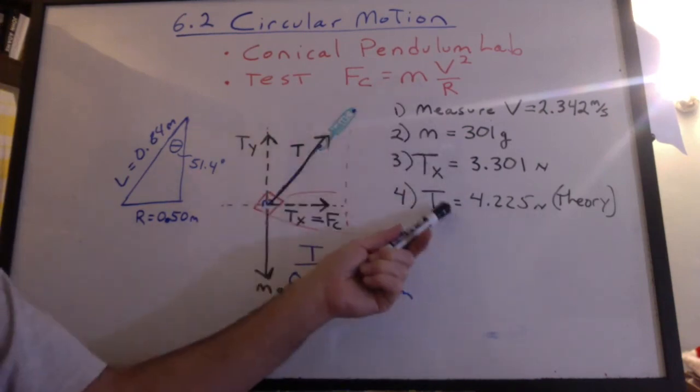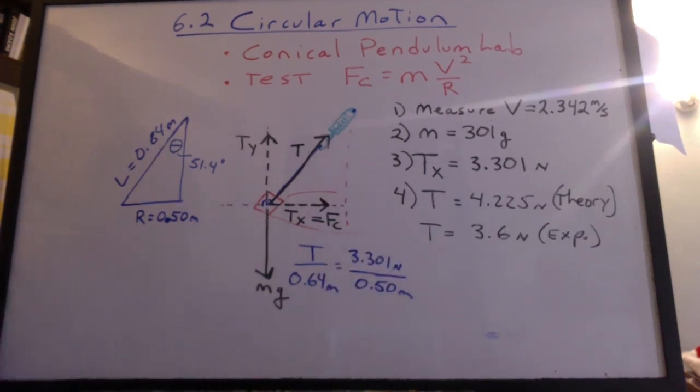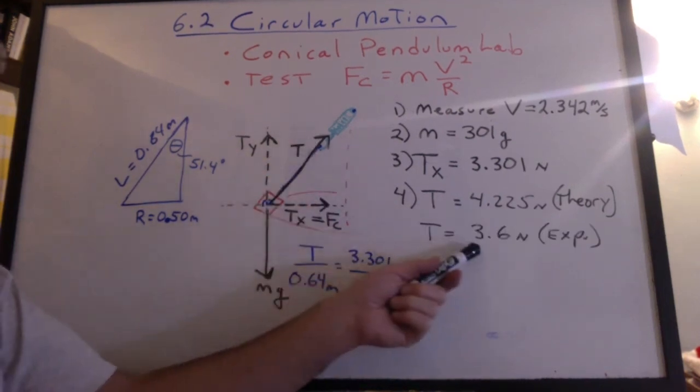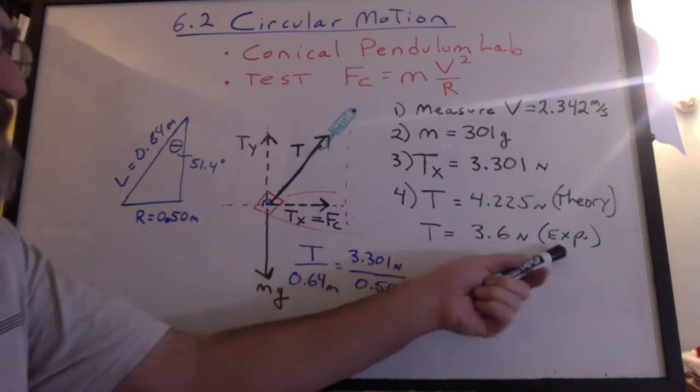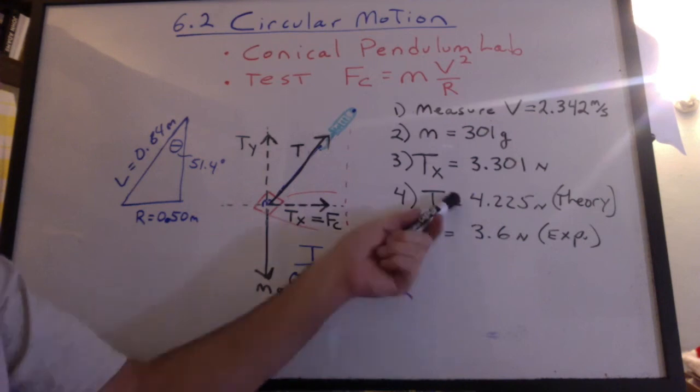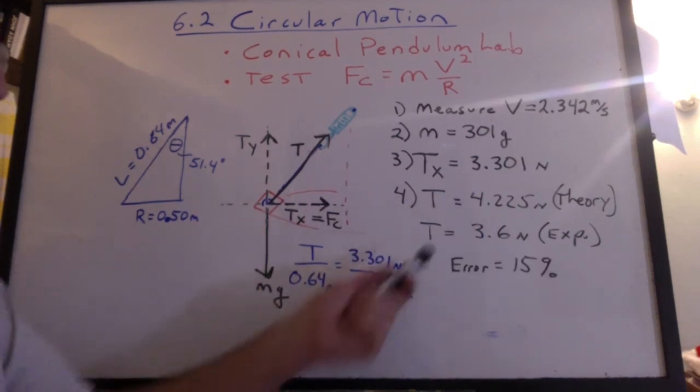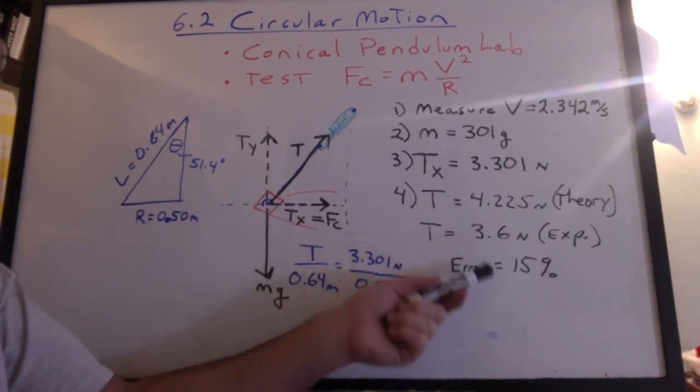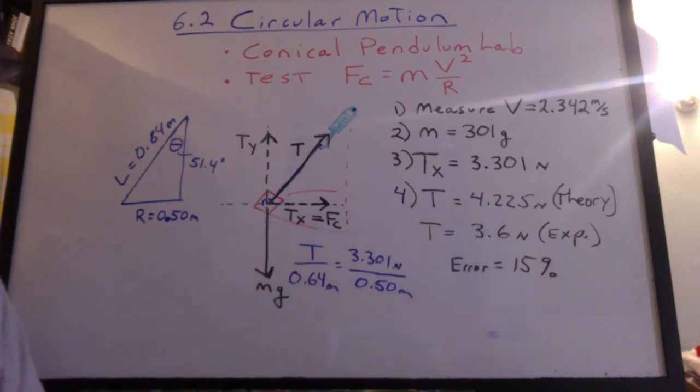So in theory, that's what it should read. Well, when I grabbed the spring scale at the end of the video, it read 3.6 newtons. That's the experimental value. That's what the spring scale actually read. So how do we do? Well, the experimental turns out to be about 15 percent lower than the theoretical. Not bad, but like I said, I'm sure it was in the grab.